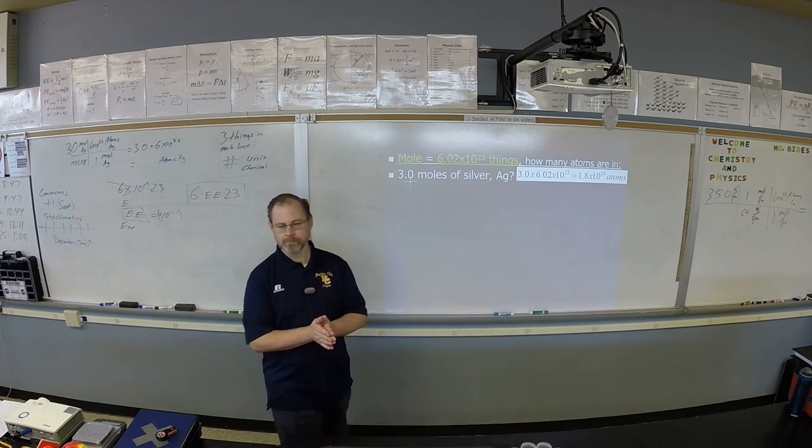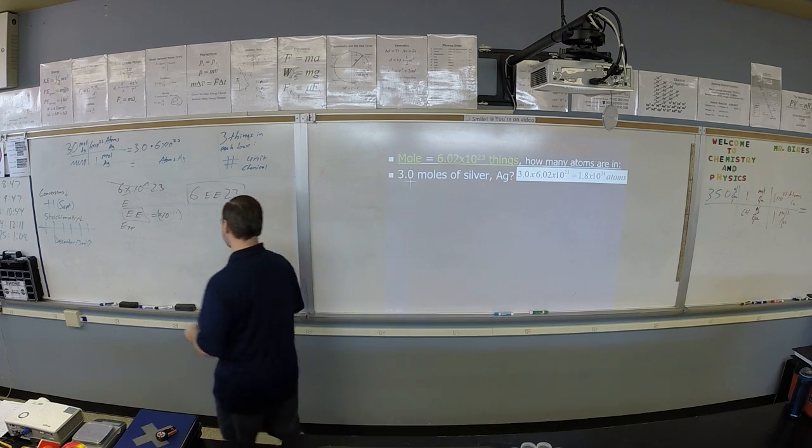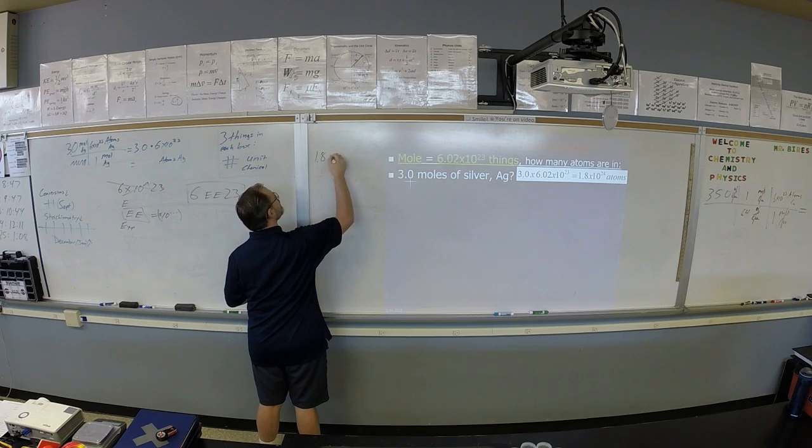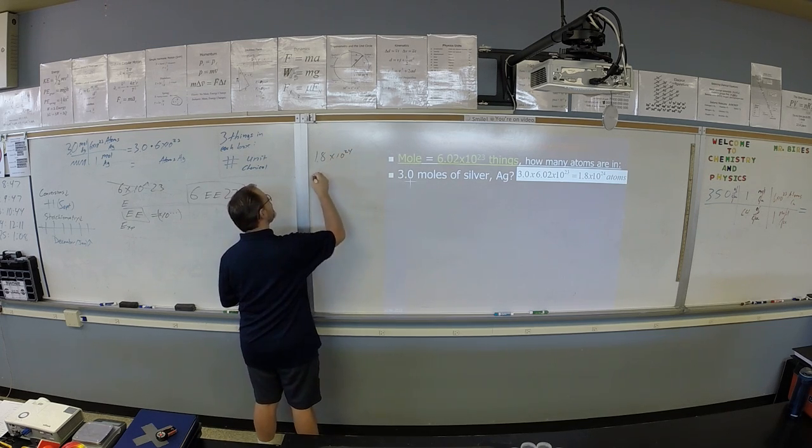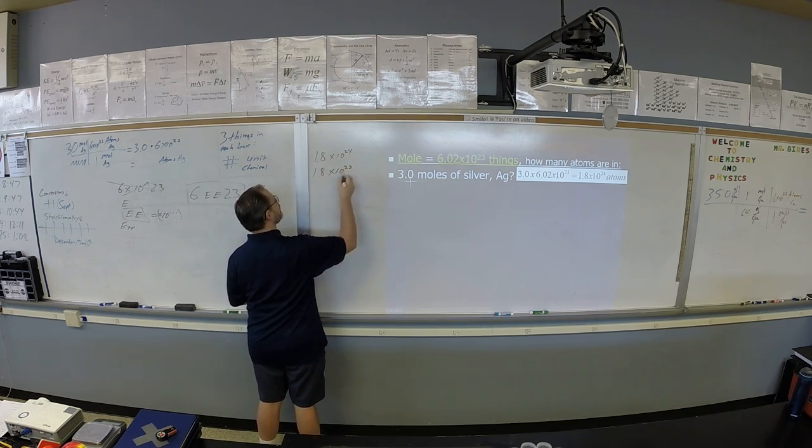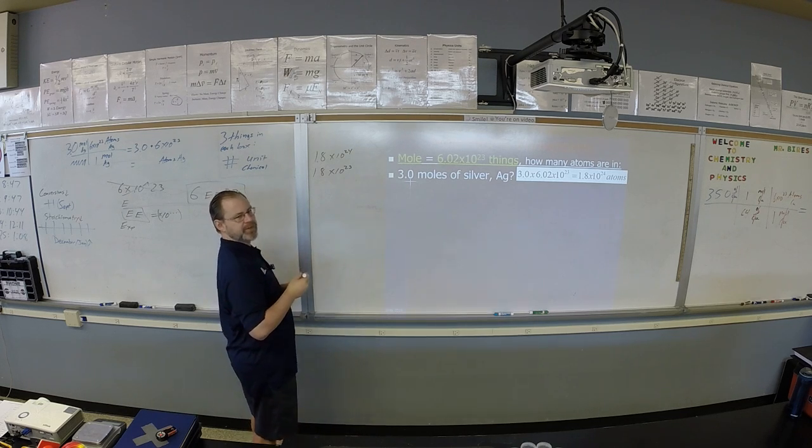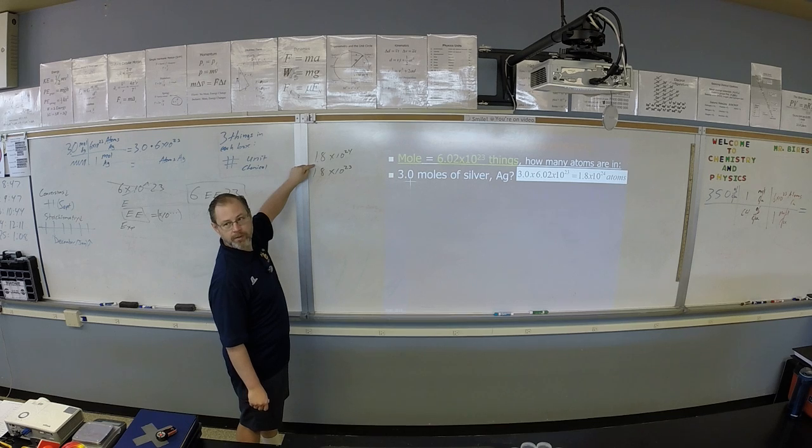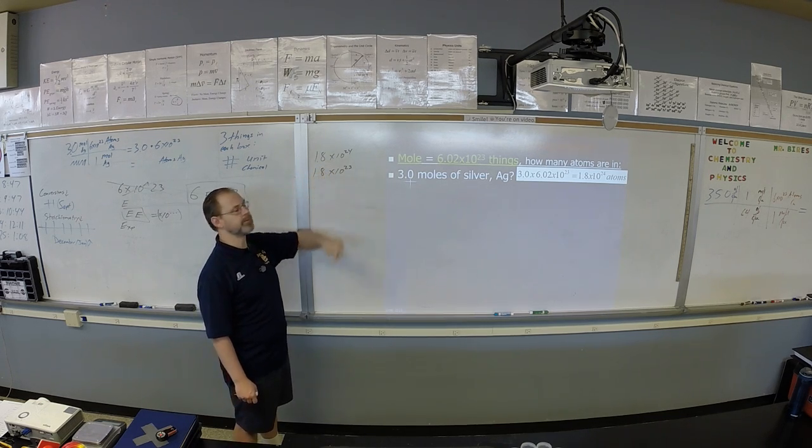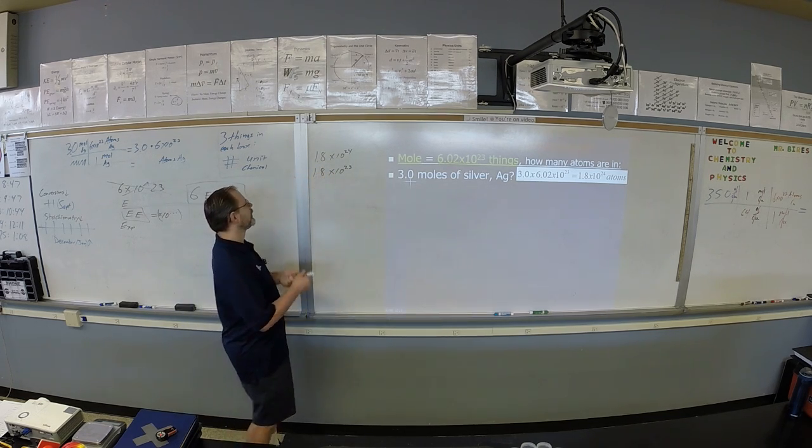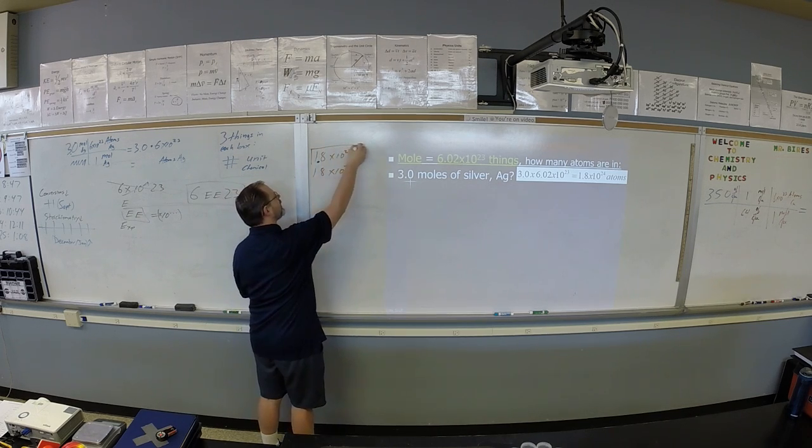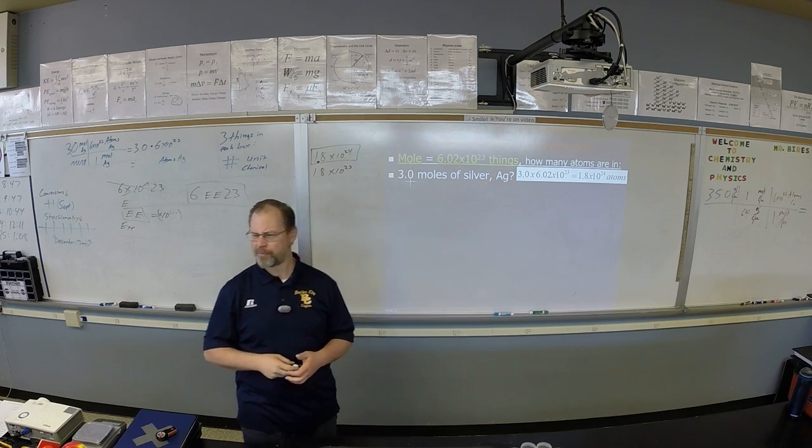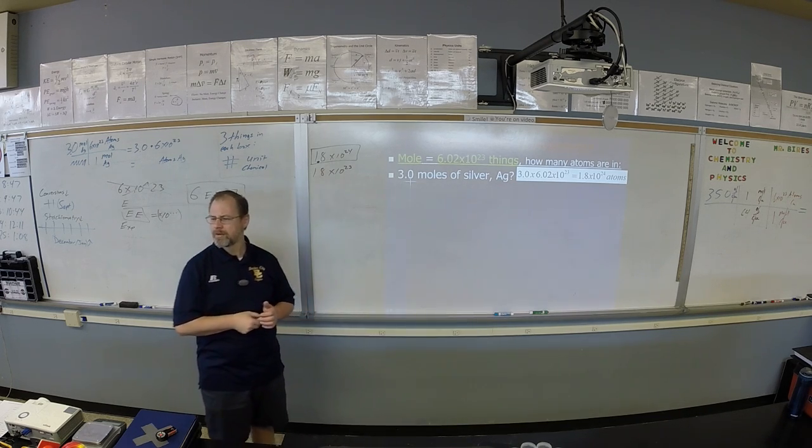Let's bang on our calculator together. Multiply 3 times 6 double E 23. Enter. 1.8 times 10 to the 24th. Your calculator is going to return the proper number, which is 1.8 times 10 to the 24th. If you did it in your head, you're going to get 18 times 10 to the 23rd. Both of these numbers are technically correct, but only one is in the proper form. And the proper form is one number, decimal point, whatever else, times 10 to the whatever.